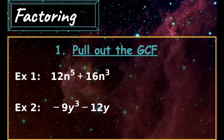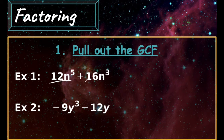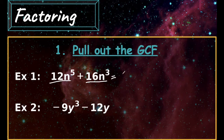Now we're going to start with examples of each of the factoring methods. The first method is pull out the greatest common factor. Our first example is 12n to the fifth plus 16n to the third. We need to think about the numbers 12 and 16 — both are divisible by 4. So we can rewrite 12 as 3 times 4, and 16 as 4 times 4.